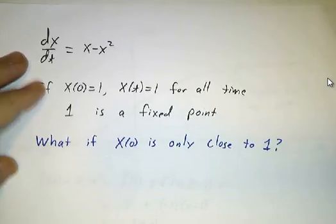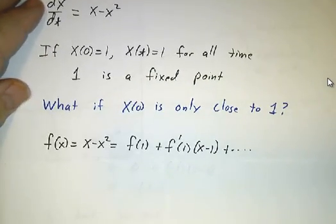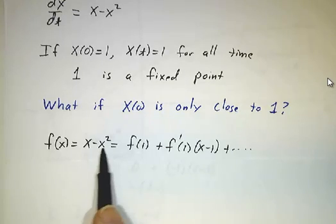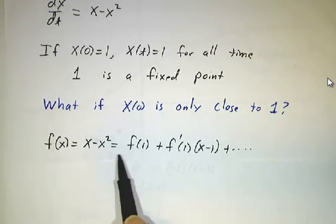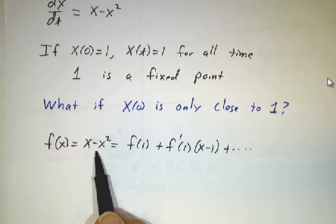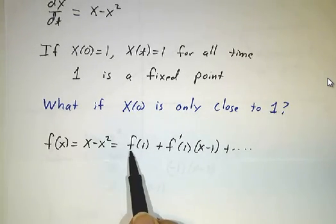And if we start off with x close to 1, then we have to approximate x - x² near 1. And this is where Taylor series helps us. Actually, in this case, it's a polynomial we could do without Taylor series. But in general, you do a Taylor expansion.